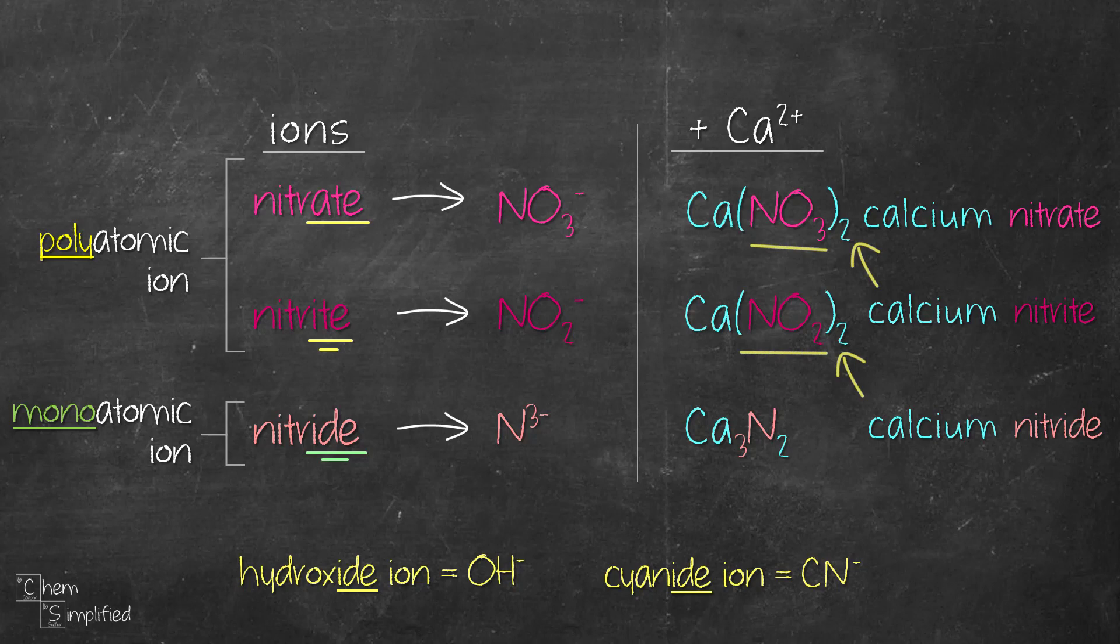NO3, that whole entire group, has two of it. That's what it meant. That's the difference between writing the formula for polyatomic and monoatomic when you have more than one group of it.